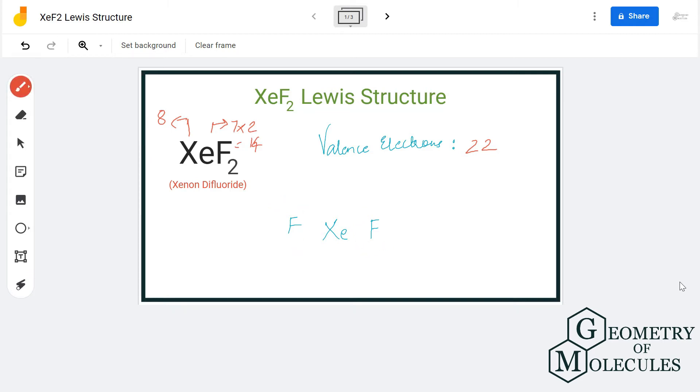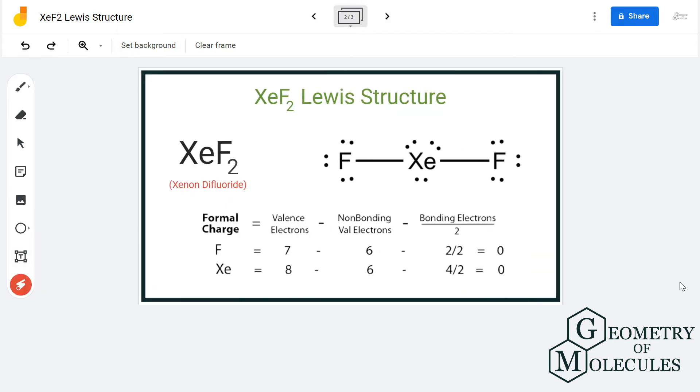There will be a single bond between a xenon atom and fluorine atom, so we will show that by drawing a line. And now we are left with two more electrons, so we could either make a double bond between F and Xe, but this will not be possible.